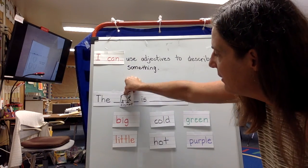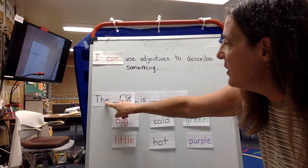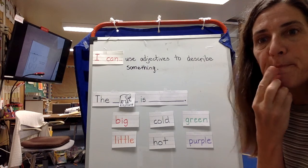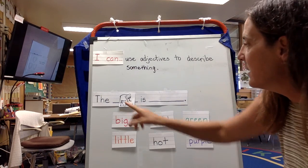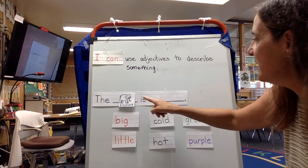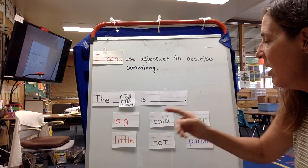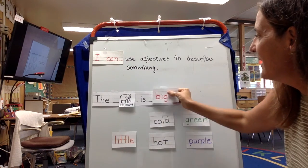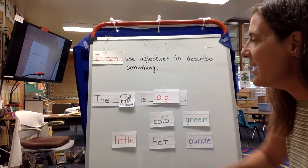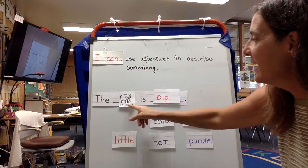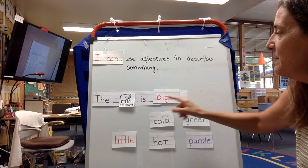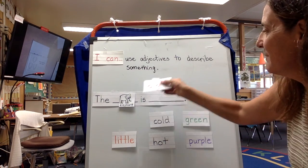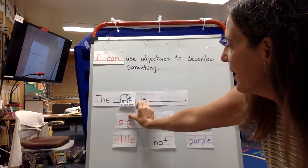How about the elephant is blank? The elephant is big. I'll use the adjective big — the elephant is big. That's my sentence.